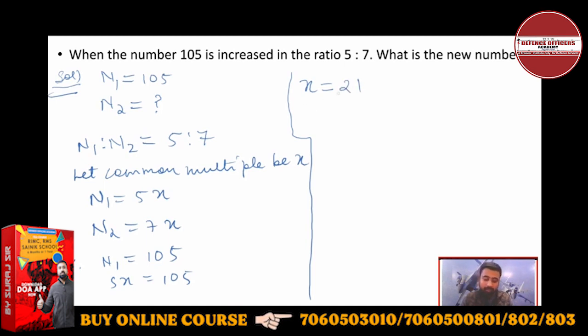And now, what do you have to find? You have to find the new number, which means n2. n2 will be 7x. So 7 into x, x is 21. So n2 will be 147. Easy.